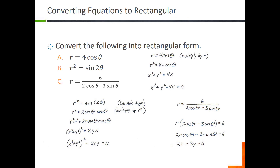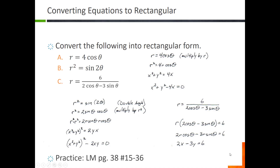For the last one, r equals six over the quantity two cosine theta minus three sine theta: multiply both sides by the denominator and distribute the r. Then r cosine theta becomes x and r sine theta becomes y, and this turns out to be a linear equation. Go ahead and see if you can finish page 38, exercises 15 through 36.